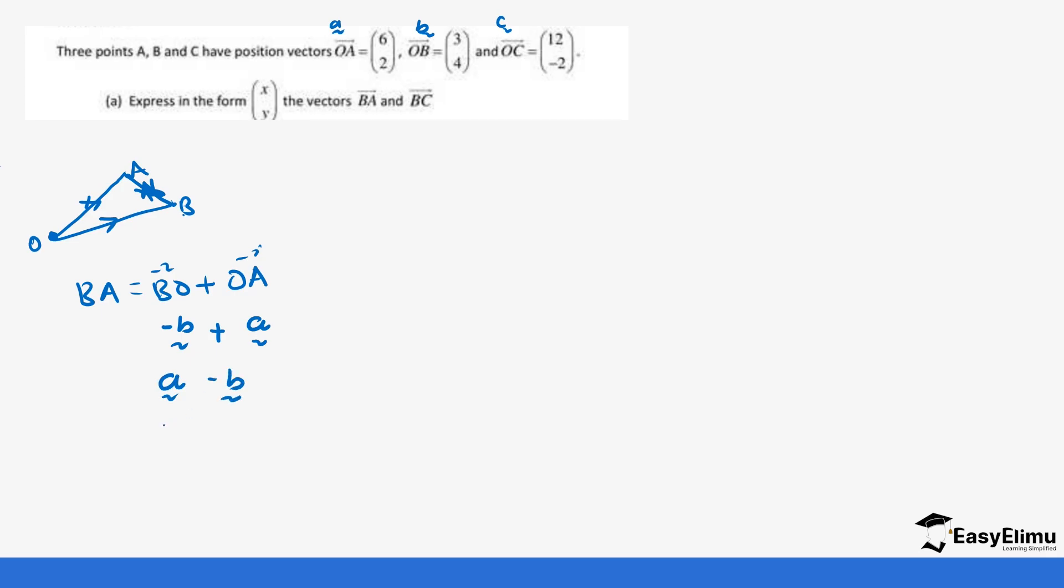And we already have A, which is (6, 2), and the coordinate of B, which is (3, 4). So this becomes 6 minus 3 and 2 minus 4, which gives us (3, -2). And so our BA is (3, -2).